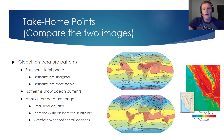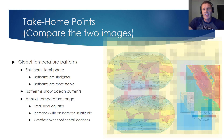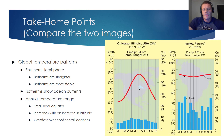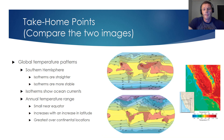It's also important to note that isotherms can help us map out ocean currents. When we take a look at the annual temperature range, the temperature ranges will be small at or near the equator. But as you move to the higher latitudes — the mid-latitudes, for instance — you will start to see greater and greater temperature ranges between the winter months and the summer months.